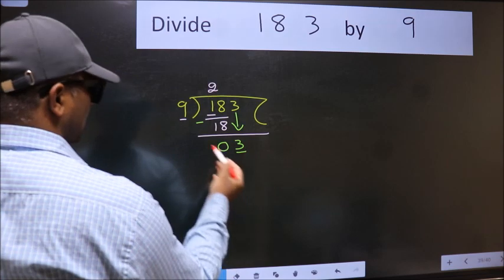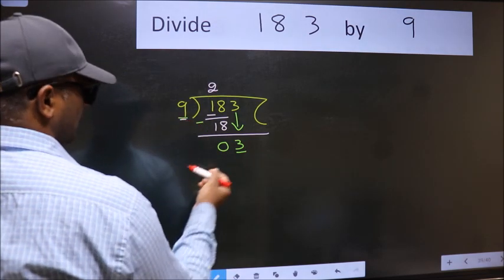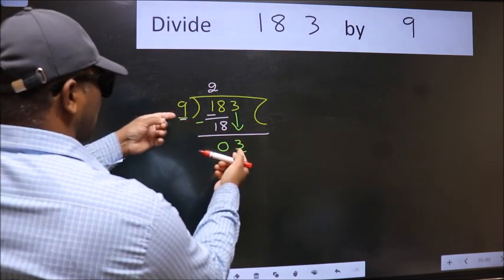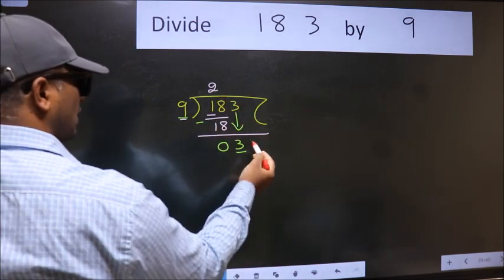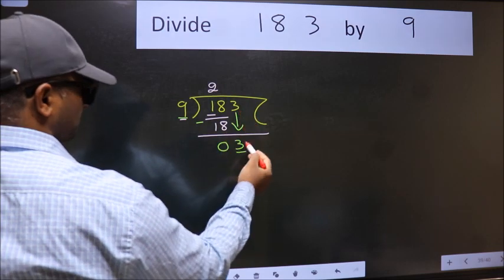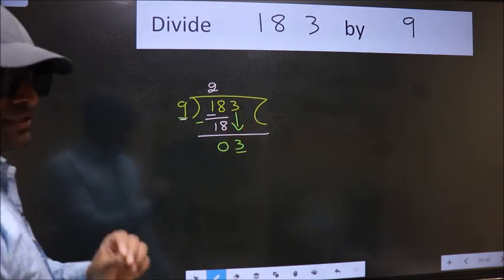And the mistake is this. Here we have 3 and here 9. 3 is smaller than 9. So what many do is they directly put dot, take 0, which is wrong.